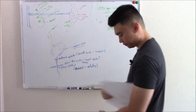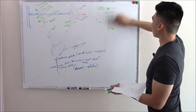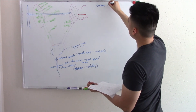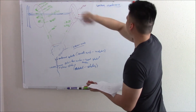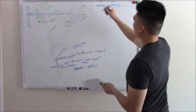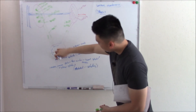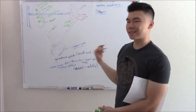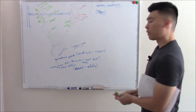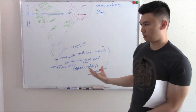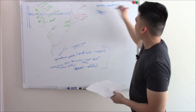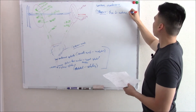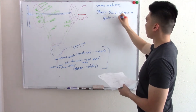Sometimes things don't go as planned, and we get urinary incontinence. One type is stress incontinence, which is due to weakness in the internal sphincter or pelvic floor muscles. Because these muscles are weak, nothing is stopping urine from leaking out when intra-abdominal pressure increases.